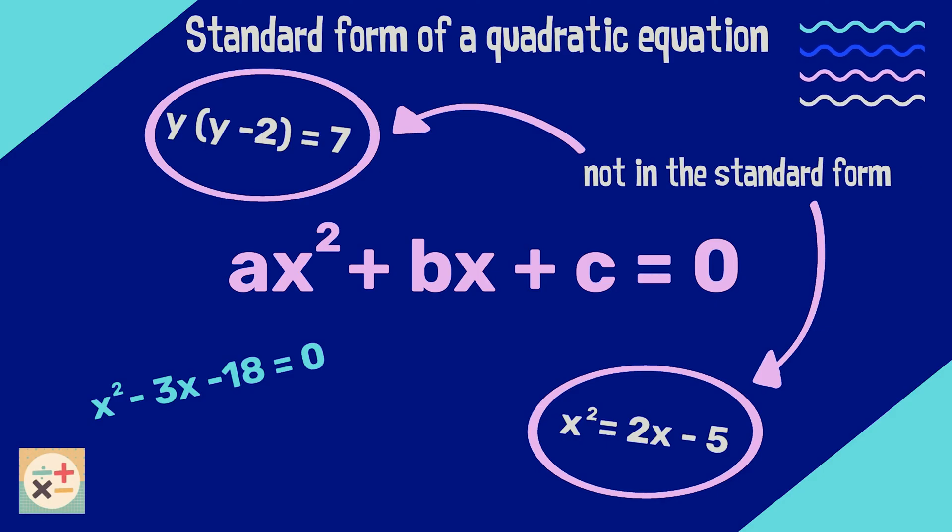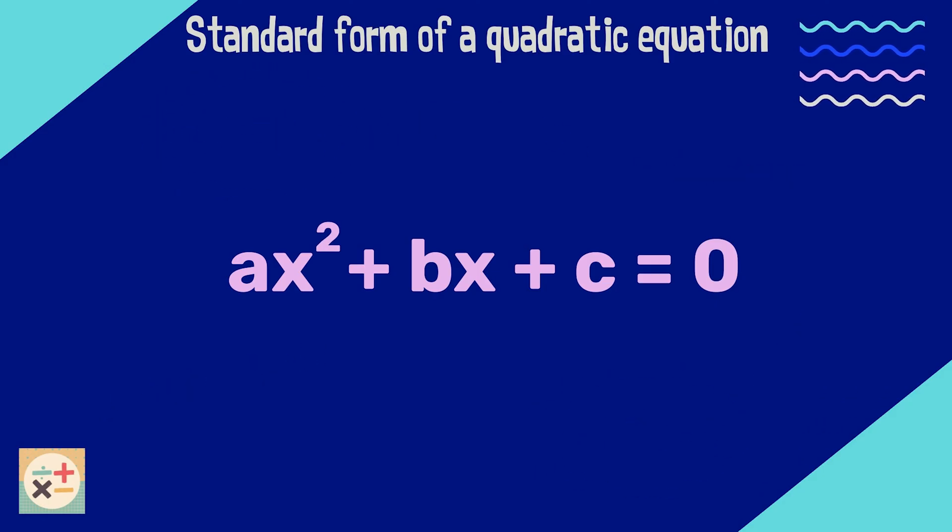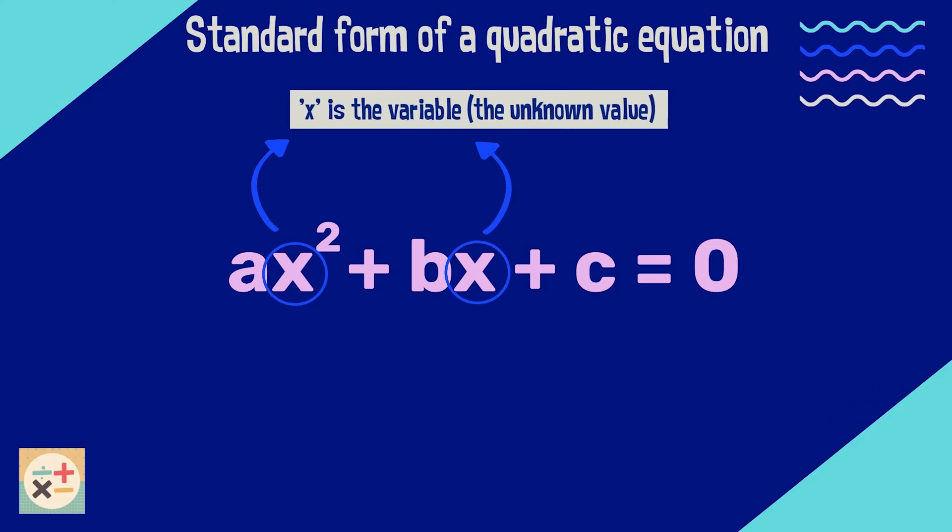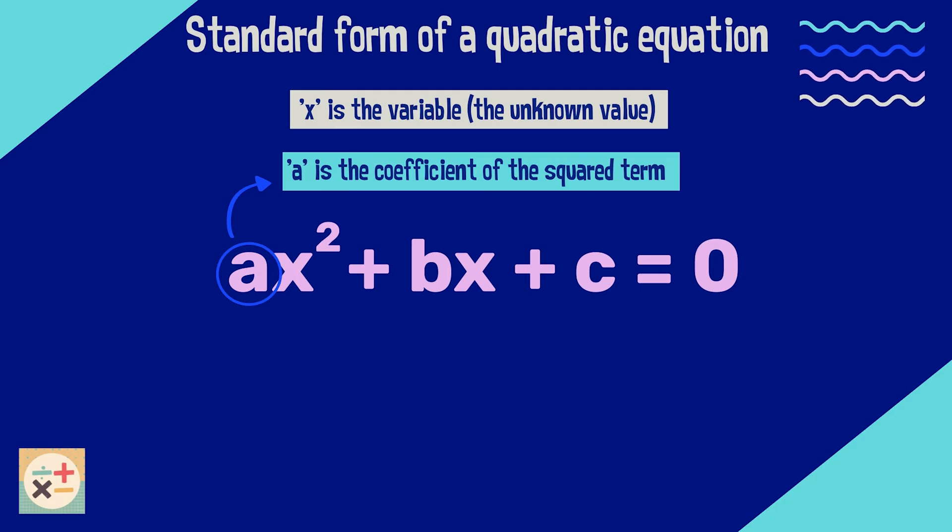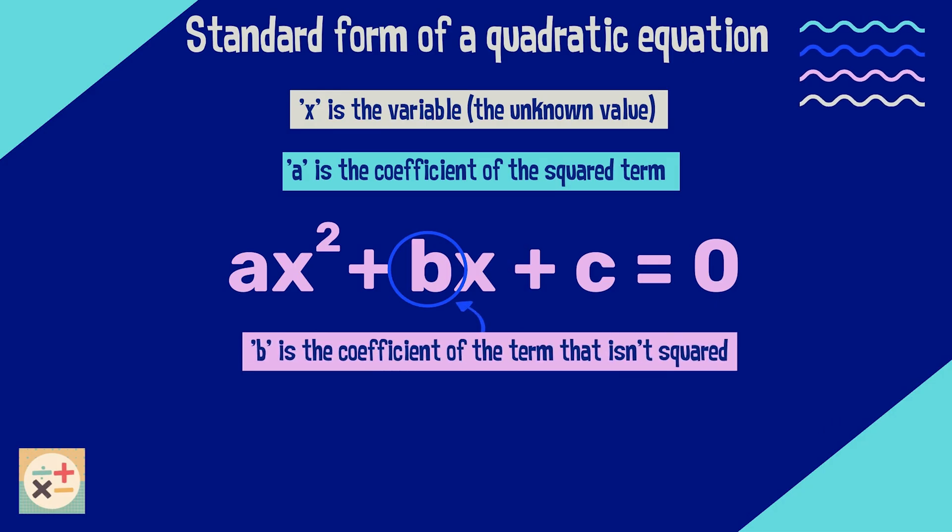But first let's have a closer look at the standard form for a quadratic equation. x is the variable, the value we don't know and want to find out. a is the coefficient of the squared term, this number can never equal zero. b is the coefficient of the term that hasn't been squared.